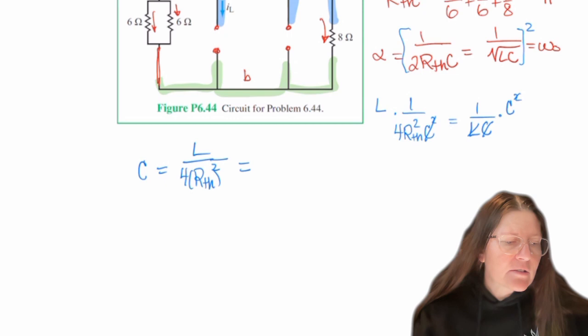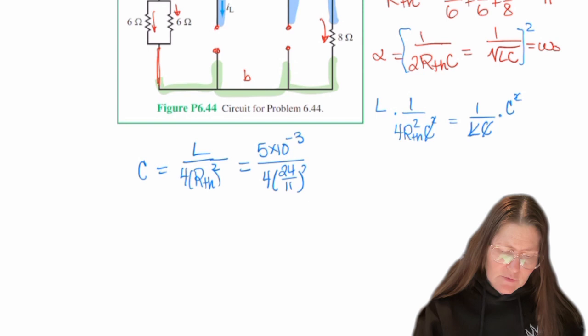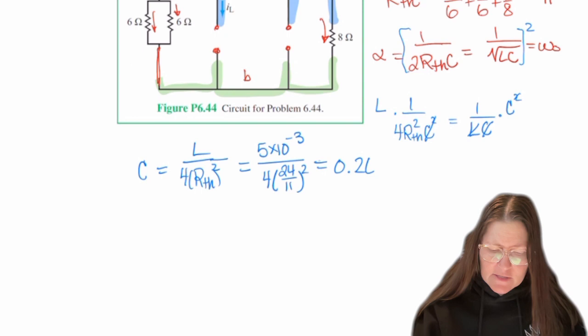And then L was 5 milli. And then RTH we found is 24 over 11 and then it's squared. So that gives us a 0.26 millifarad.